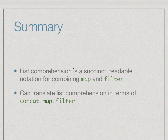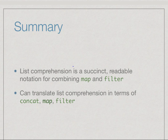In summary, we often use map and filter together, and list comprehension is a succinct and readable way of combining these functions so we can directly understand what's going on. But list comprehension is not itself a new piece of notation in Haskell — it is merely syntactic sugar, an easy-to-read form of something that can be described directly using concat, map, and filter.